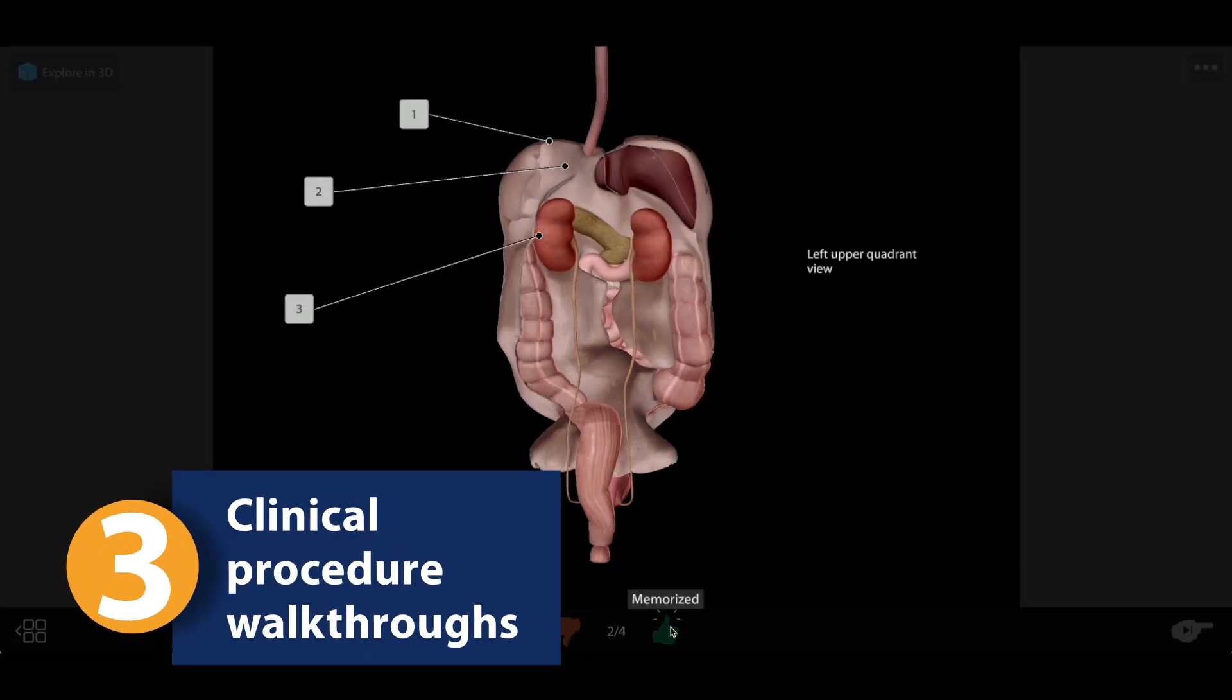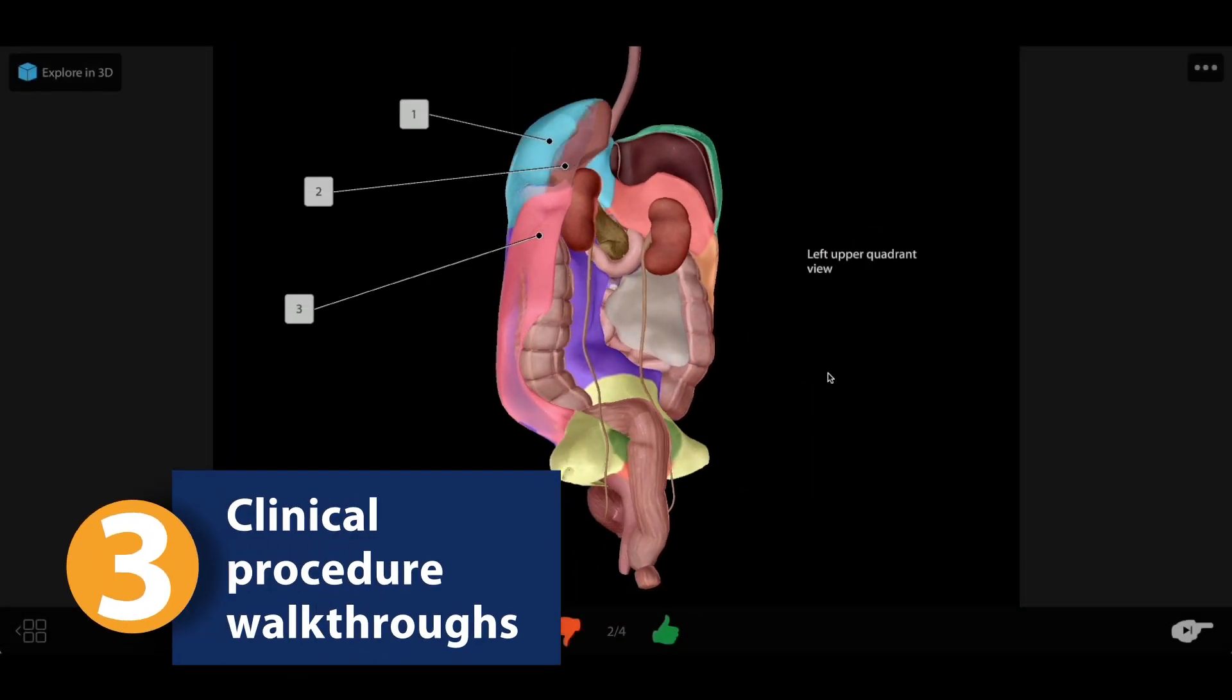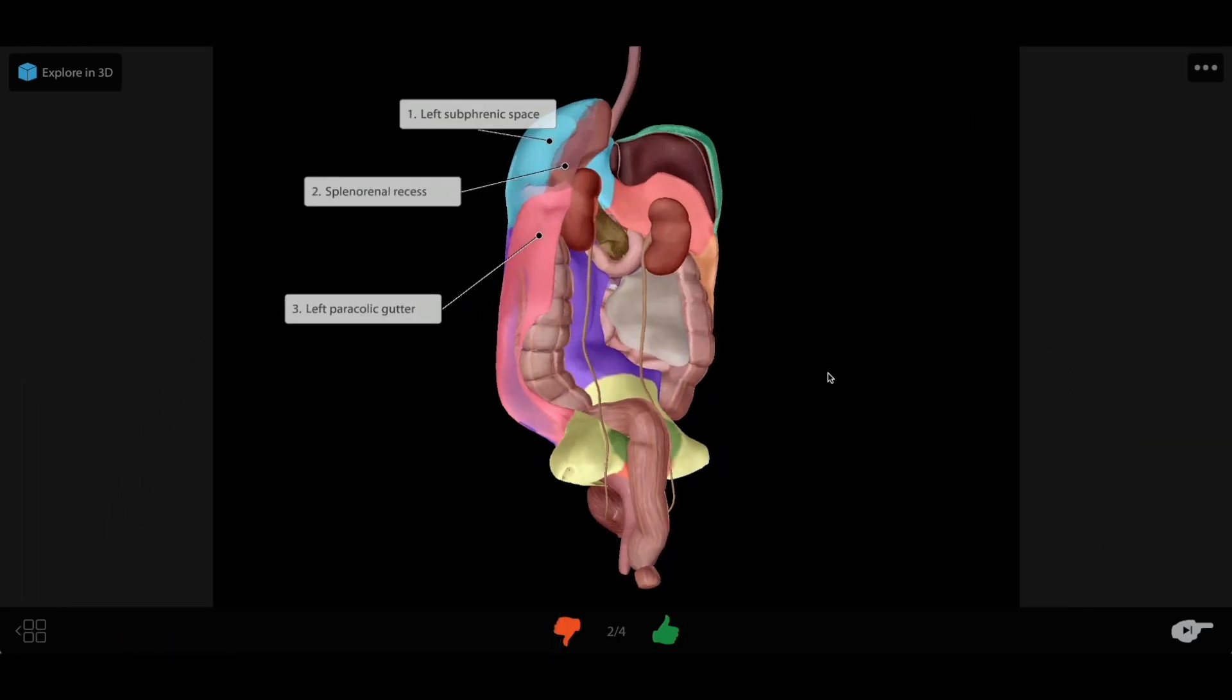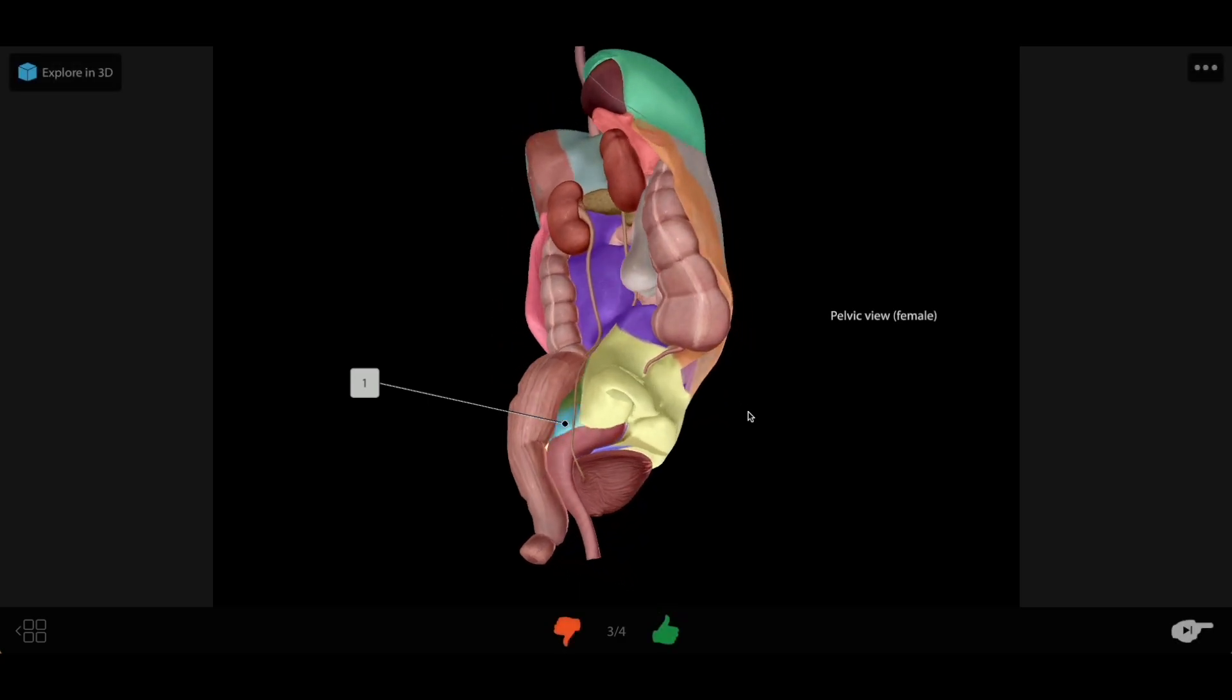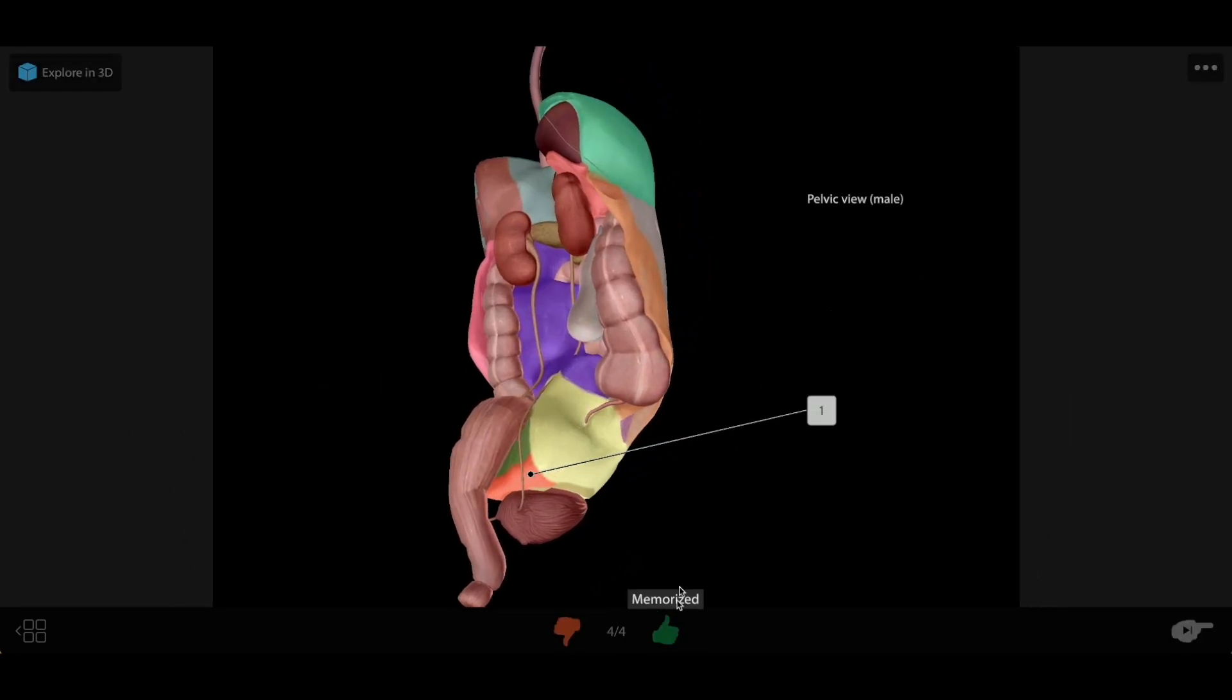When it comes to learning skills for clinical practice, Visible Body's flashcards can provide an interactive walkthrough of important procedures, such as the FAST exam. Students can use Visible Body's peritoneum model to quiz themselves on the quadrants of the abdominal region and the key structures within each of them.